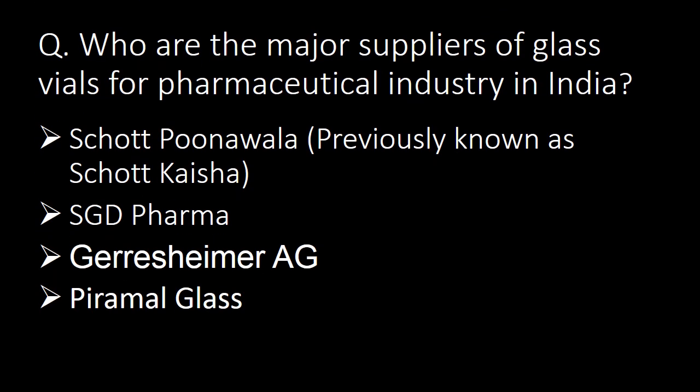Next question: who are the major suppliers of glass vials for the pharmaceutical industry in India? There are many suppliers; however, four are mentioned here. First is Schott Poonawalla (previously known as Schott Kaisha), second is Schott Pharma, third is Gerresheimer, and fourth is Piramal Glass.